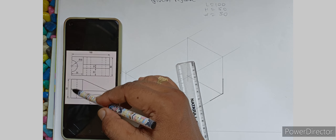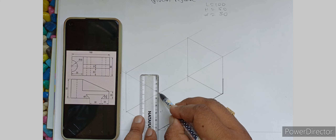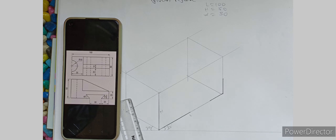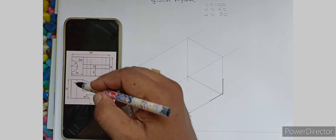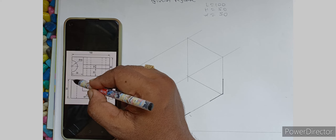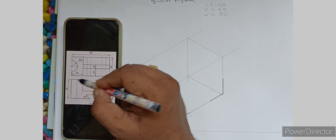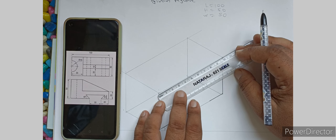The height is 50 mm, so from this side this is 50 mm. Now go inside — how much? 30 mm is given in the plan, so you have to go inside 30 mm. From this side also, you have to go inside 30 mm.